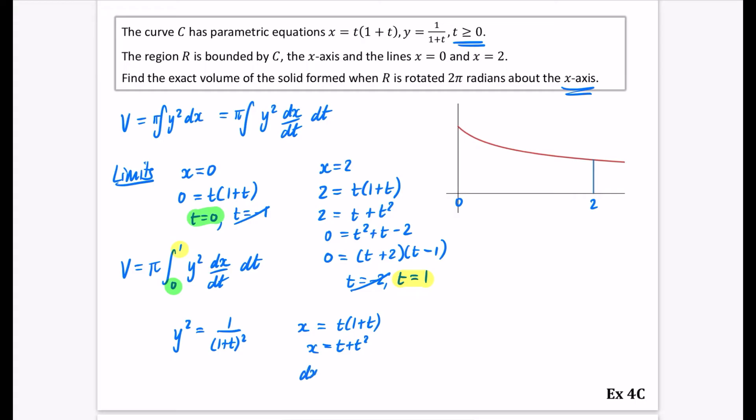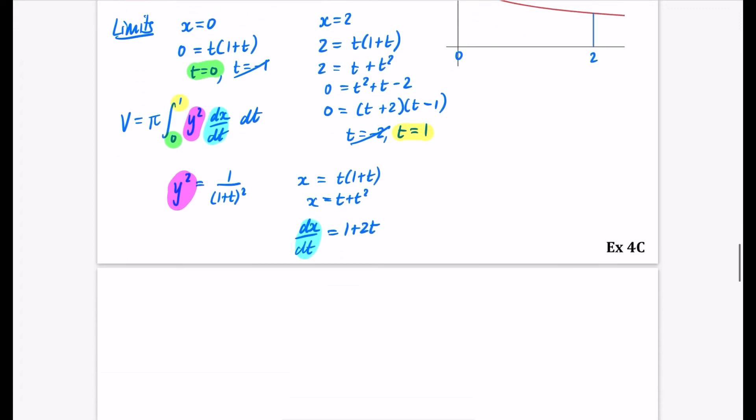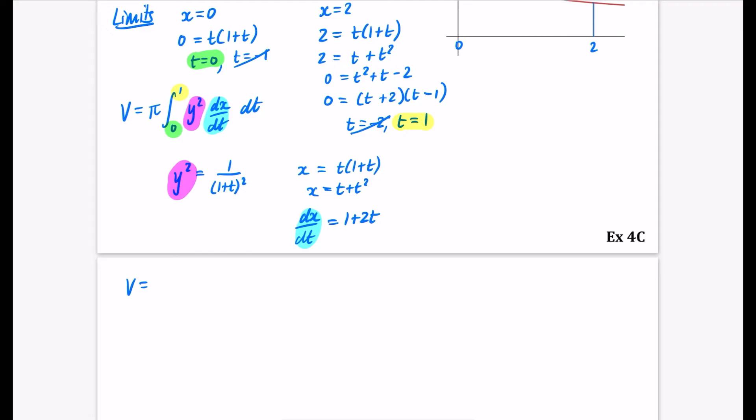So I'm going to differentiate x with respect to t and that's 1 plus 2t. So I have now got the y squared part and the dx/dt part and I can just do the integration. So that's the integral π between 0 and 1 of 1/(1+t) squared multiplied by (1+2t) dt.